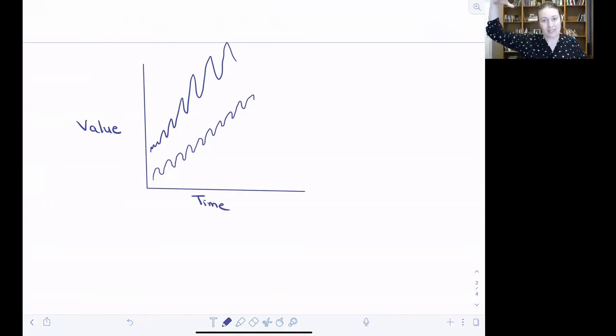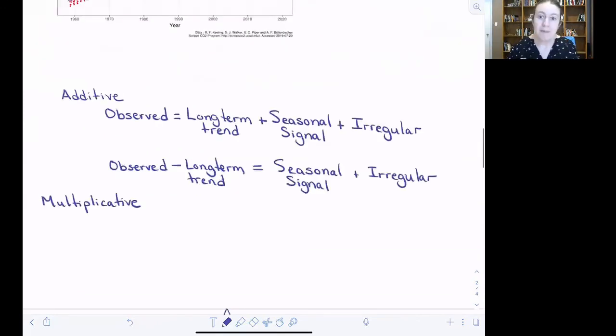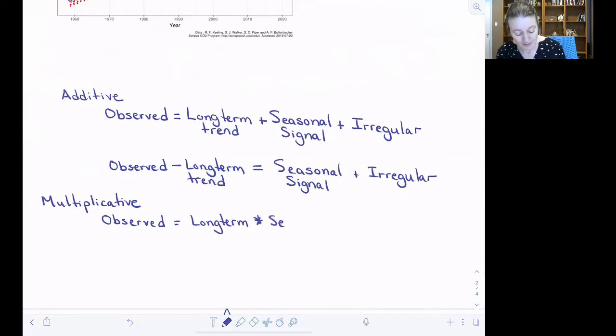And so you have this kind of amplification in the seasonal cycles with the increase over time. So mathematically, how that works is very similar to what we did for the additive. But this time, instead of everything being added together, they're multiplied. So the long-term is multiplied by the seasonal signal, which is multiplied by the irregular.